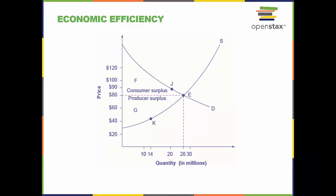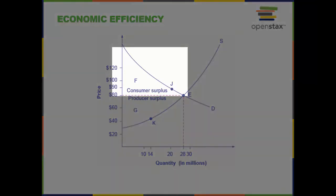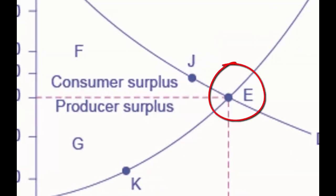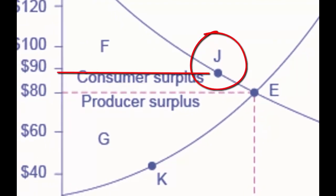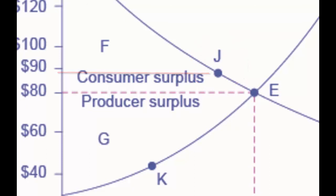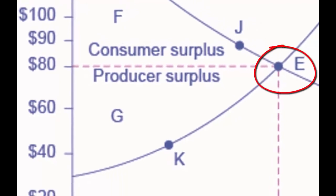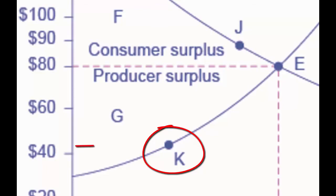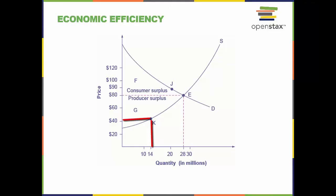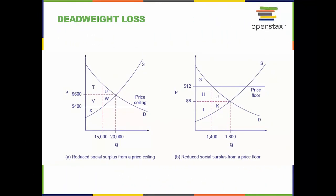The supply and demand models show us how efficient a market can be. There are benefits or surpluses to be realized by both consumers and producers. The somewhat triangular area labeled F shows the area of consumer surplus, which shows that the equilibrium price in the market was less than what many consumers were willing to pay. Point J on the demand curve shows that even at the price of $90, consumers would have been willing to purchase a quantity of 20 million. The area labeled G shows the area of producer surplus, which shows that the equilibrium price received was more than what many producers were willing to accept. For example, point K on the supply curve shows that at a price of $45, firms would have still been willing to supply a quantity of 14 million.